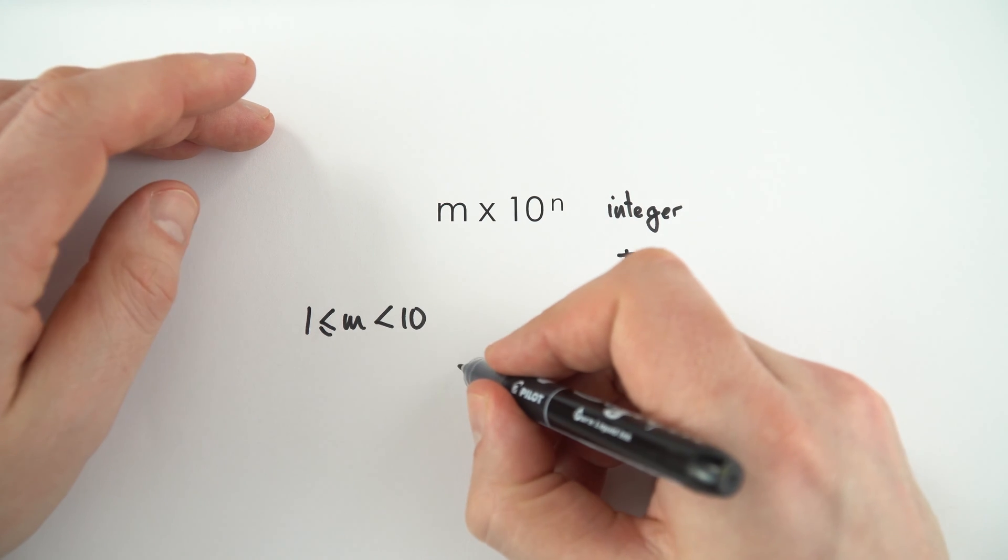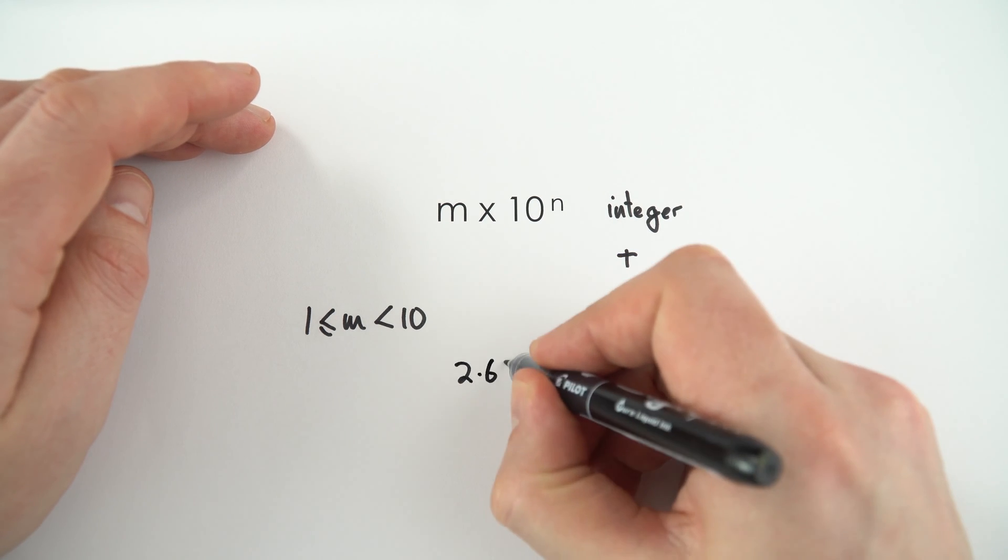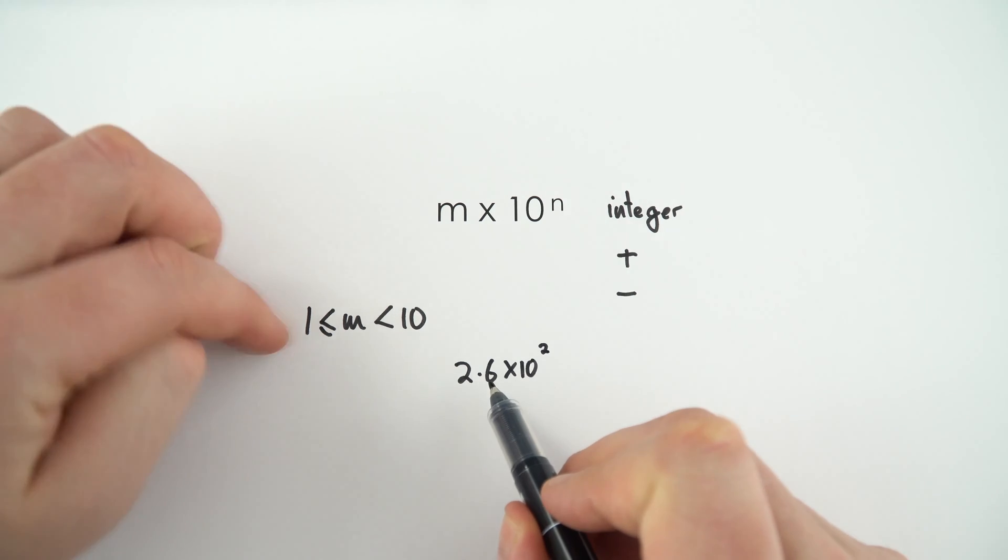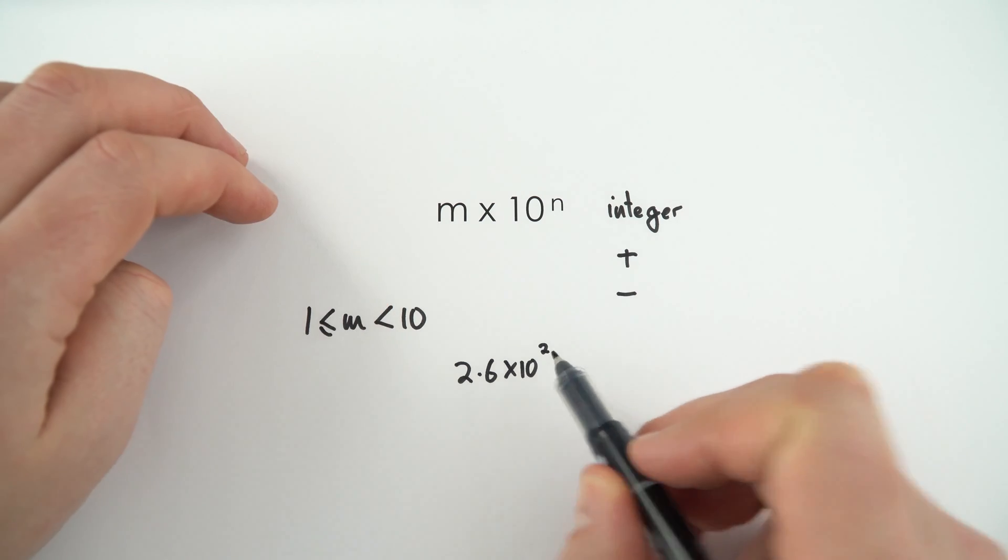Now let's have a look at an example. Say for example you had the number 2.6 times 10 to the 2. Okay, so this number here, between 1 and 10, and this is a whole number.